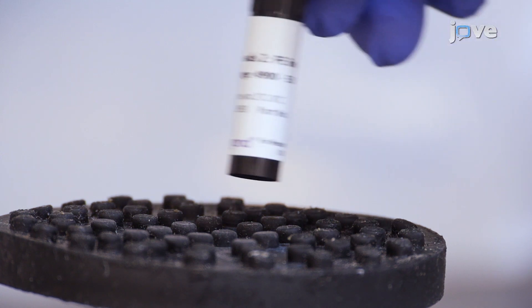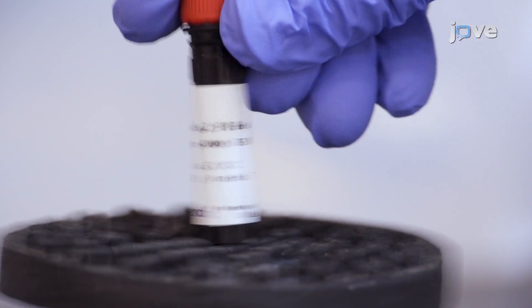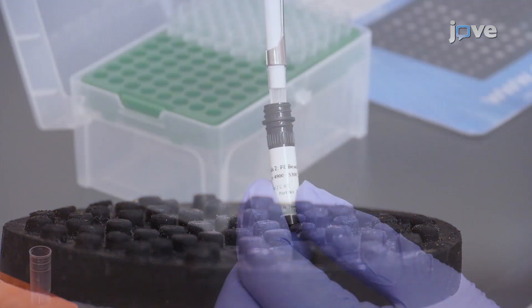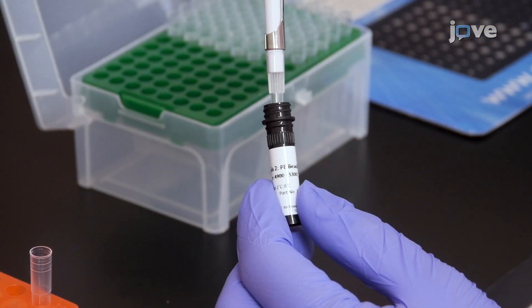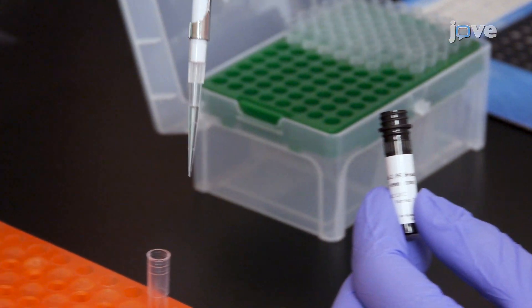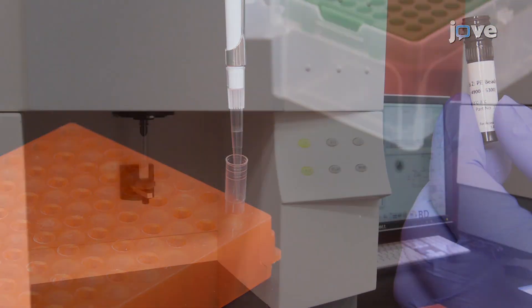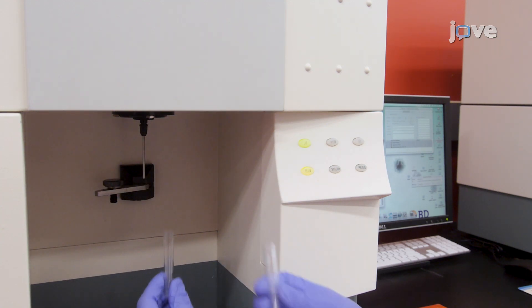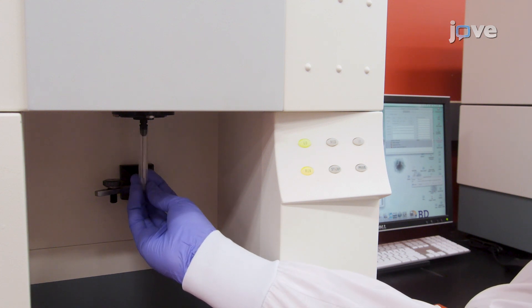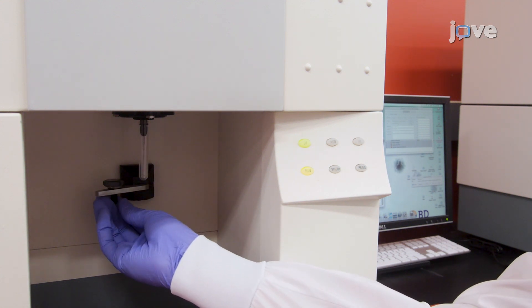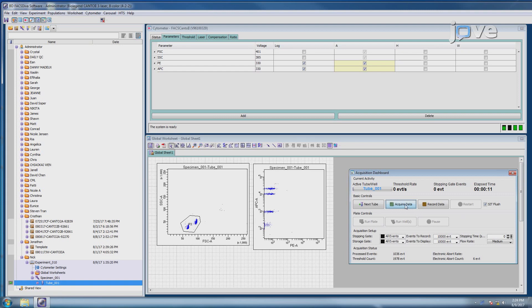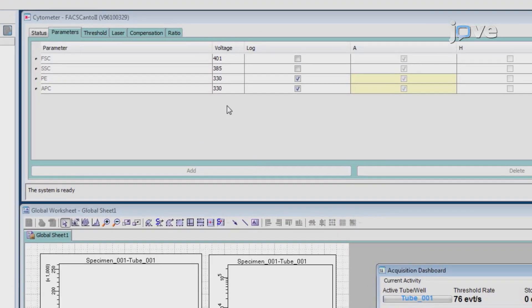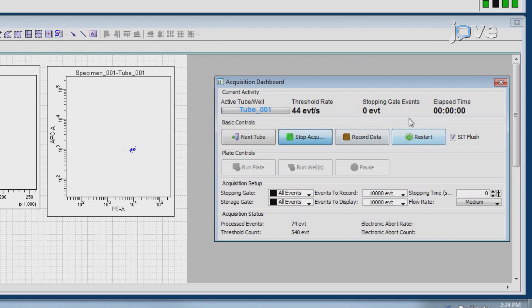Next, vortex the vial of PE setup beads for 30 seconds to resuspend the beads. Transfer 400 microliters of the resuspended PE beads to a new FACS tube. Replace the raw beads tube in the flow cytometer with the PE beads tube. Adjust the photomultiplier tube voltage for the PE fluorescence channel setting so that the MFI of the PE beads falls between the lot-specific range found listed on the PE beads vial.